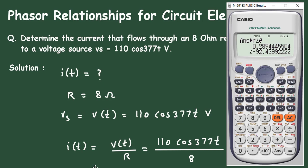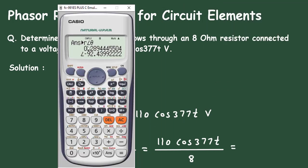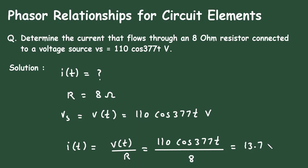This is equal to 110 divided by 8. So, it is 13.75 cos 377T.